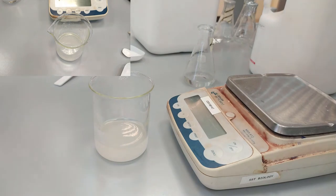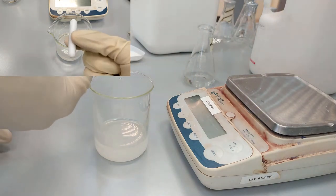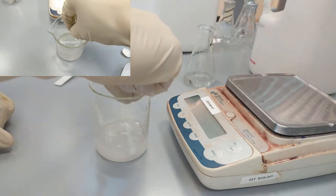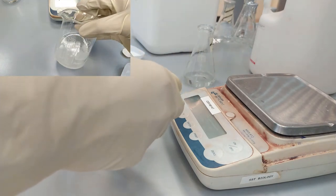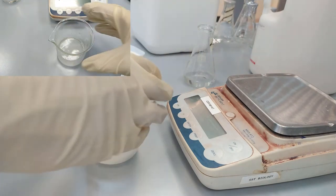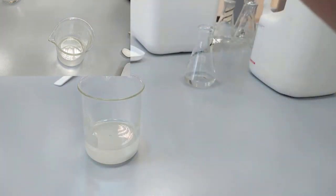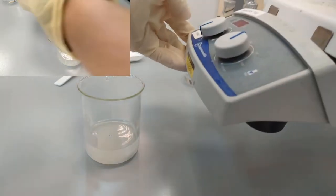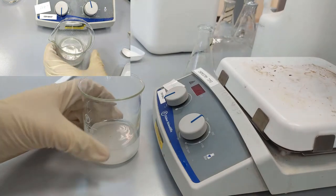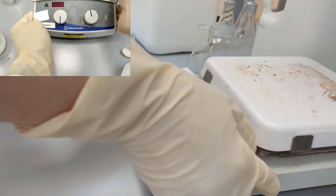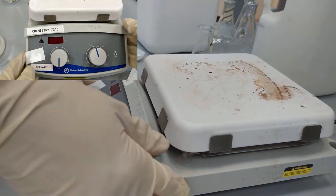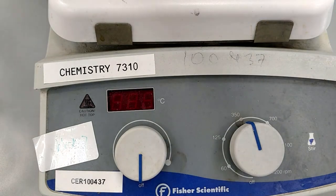We are going to mix it with a magnetic stirrer using the magnetic beam. So you put the magnetic beam in the solution. Of course, it has to be clean. Then you take the magnetic stirrer.